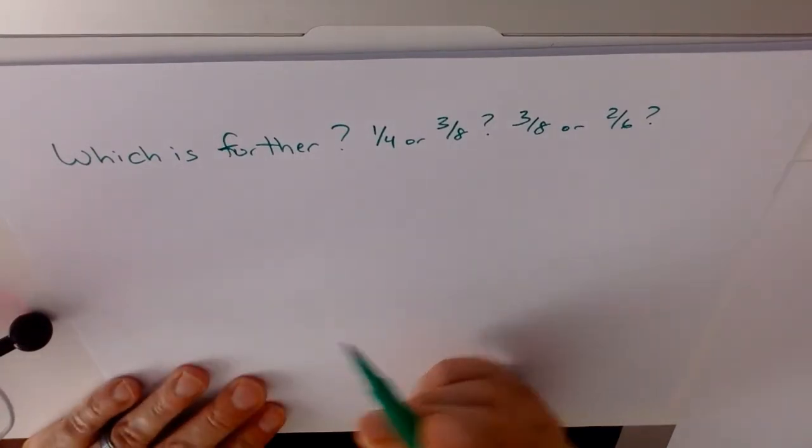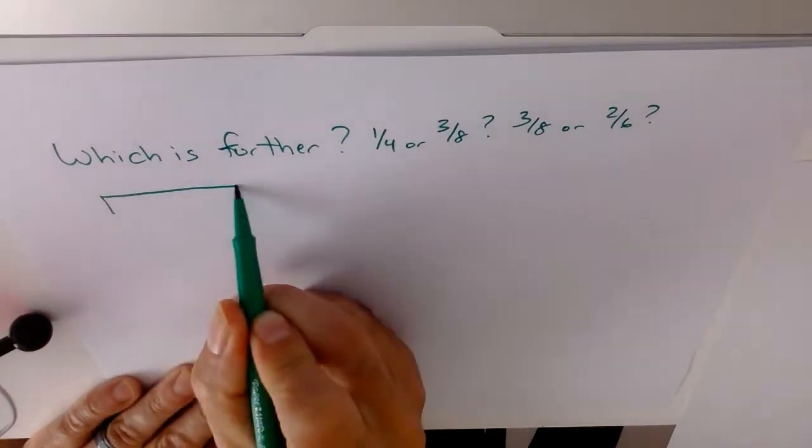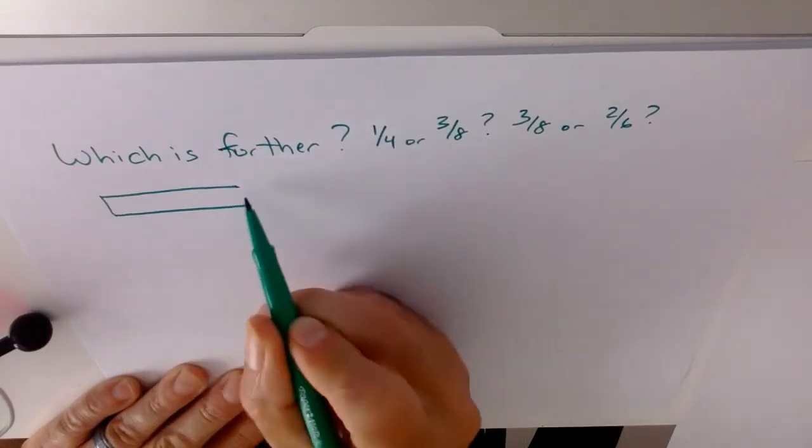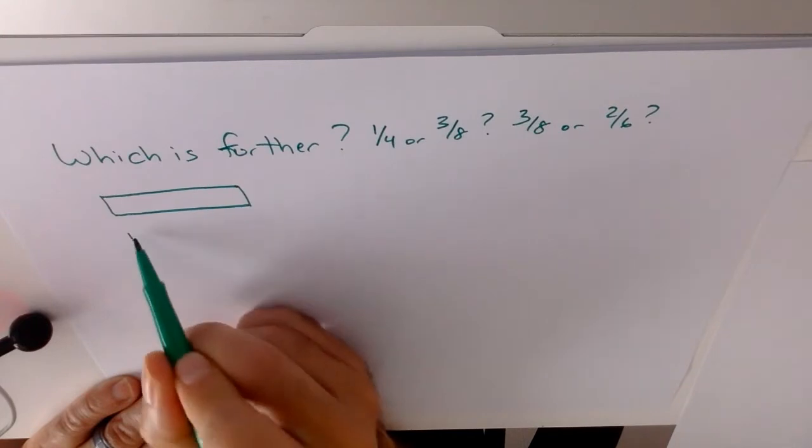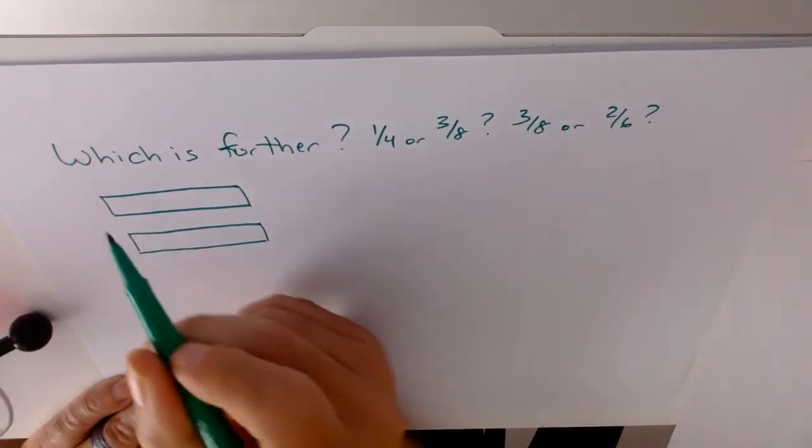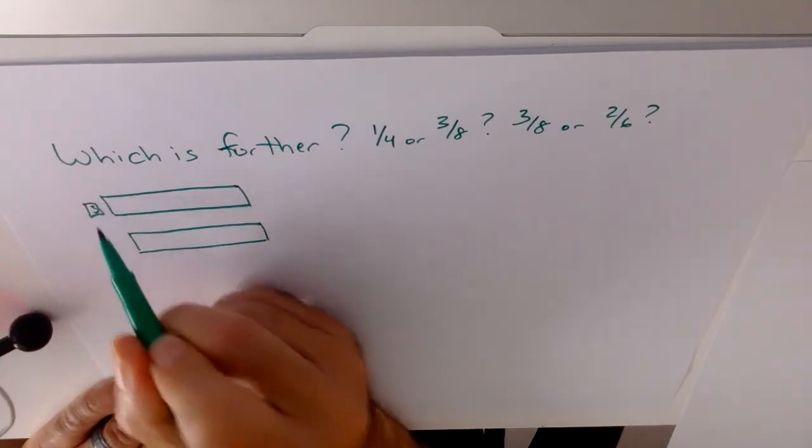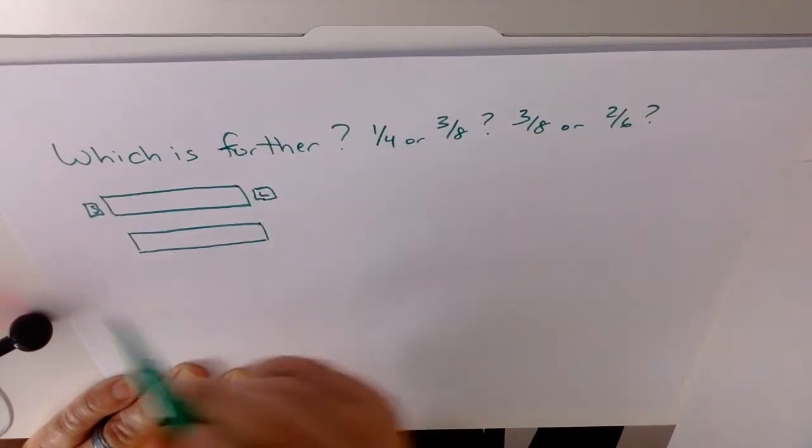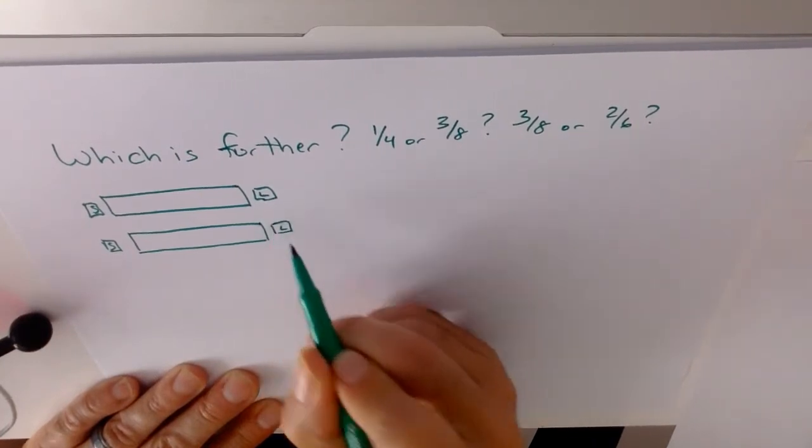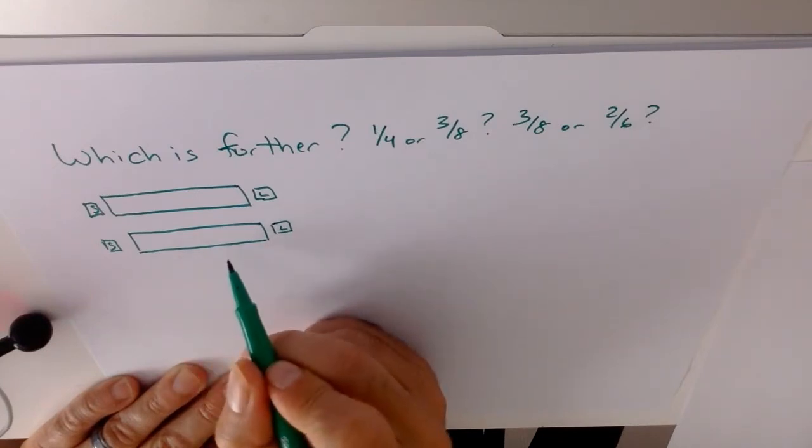Another problem we run into is with quarters and sixths or thirds and things like that. So you're going to get a word problem. Say, who goes the furthest? And they'll say something like, person A is at the school and needs to get to the library. Person B is also at the school and needs to get to the library. However, person A is one quarter of the way there, and person B is 3 eighths of the way there. Who's closest?